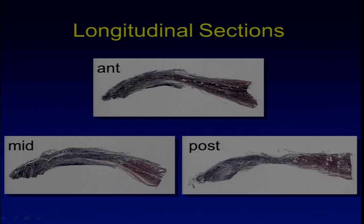This is the cross-section of the anterior, middle, and posterior part of the supraspinatus tendon. If you go posteriorly, you see the covering by the infraspinatus tendon. The articular side tear, or PASTA lesion, occurs from the capsule, then layer four, three, and then the main part, layer two. Eventually it will become a full thickness tear.